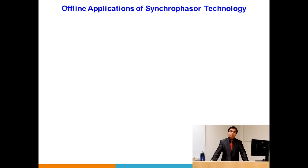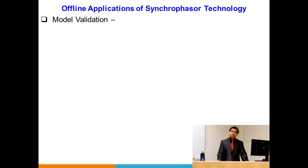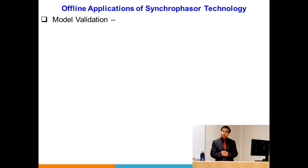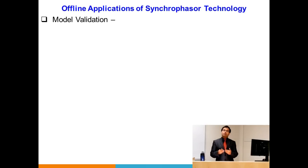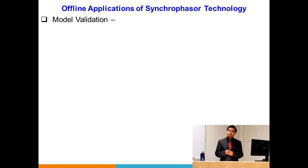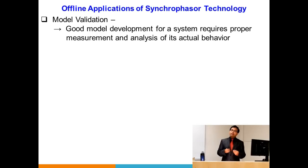Let's first look at the offline applications. The first one is model validation. It is extremely important for us to model power systems in the form of mathematical equations. Models can be at the component level — describing components like generators — and they can also come up to the system level. How well we model or form equations for those components will decide how accurate we can be while doing planning studies or operational studies. A good model will facilitate better planning and better operation.